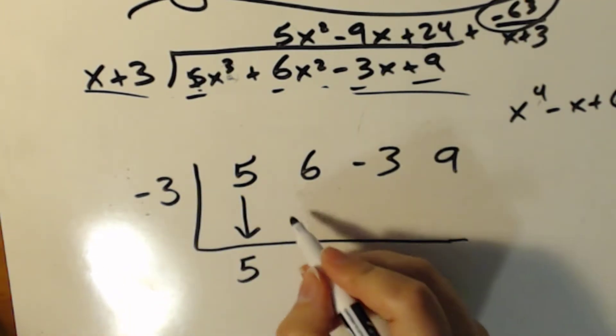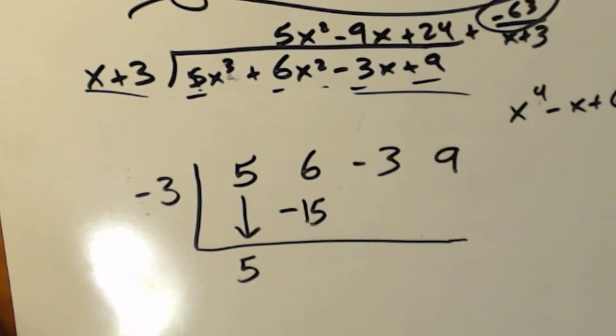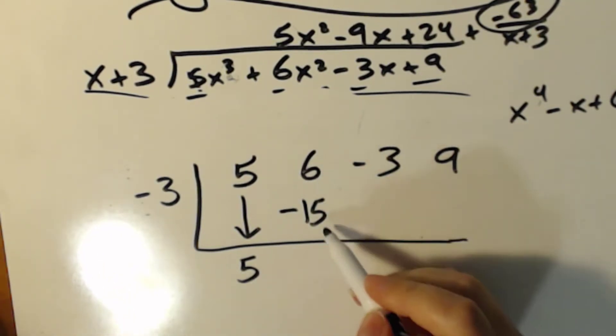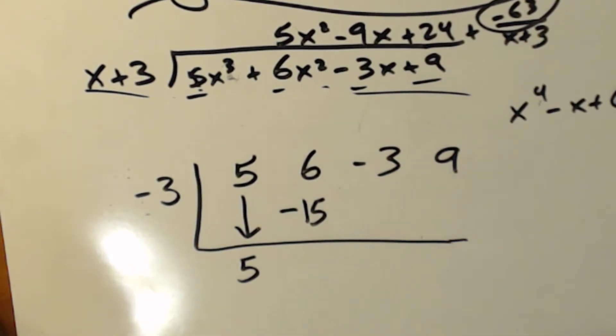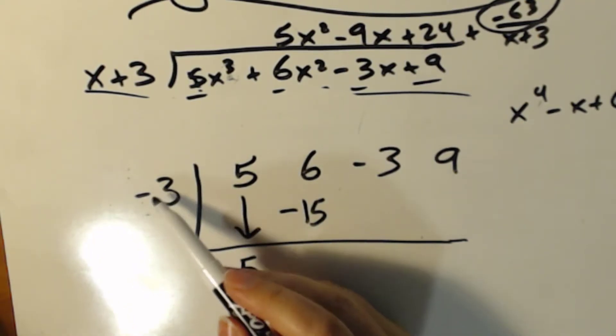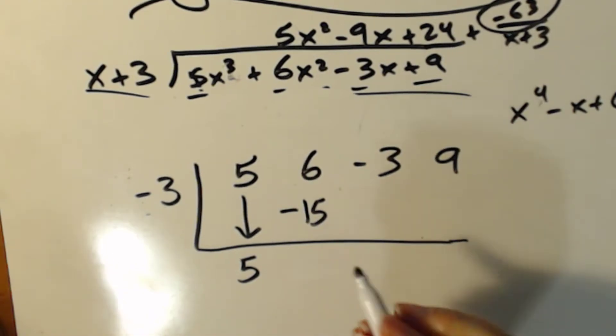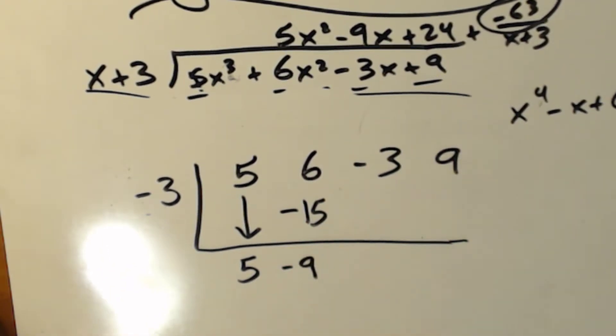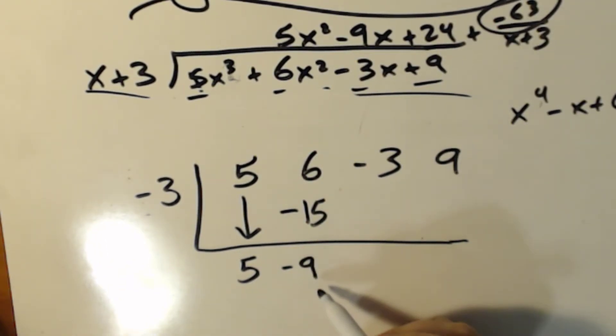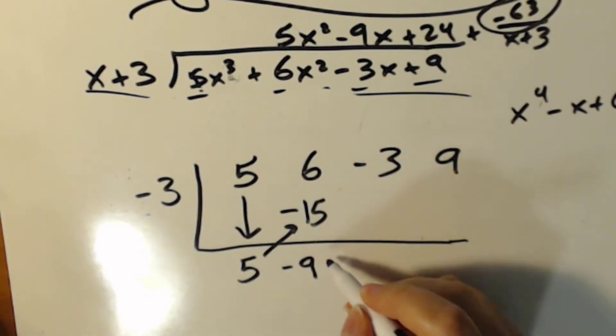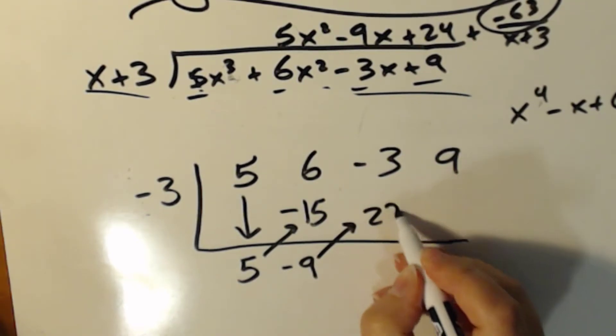And then I'm going to take the number down here and multiply it to this up here. 5 times negative 3 is negative 15. And then I'm going to add these two terms. No changing signs. The only sign we changed was this right here. From there, we just straight add. So 6 plus negative 15 gives me negative 9.